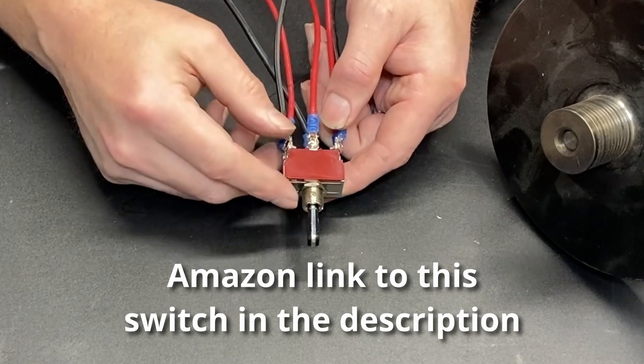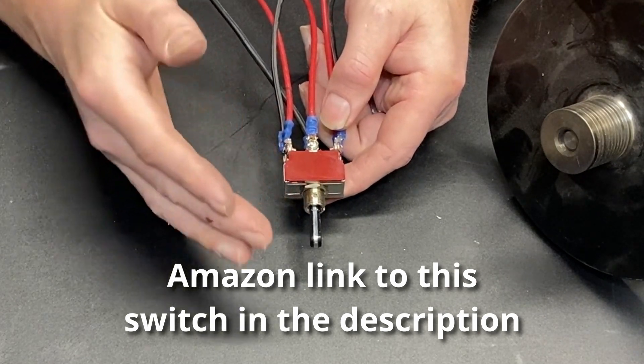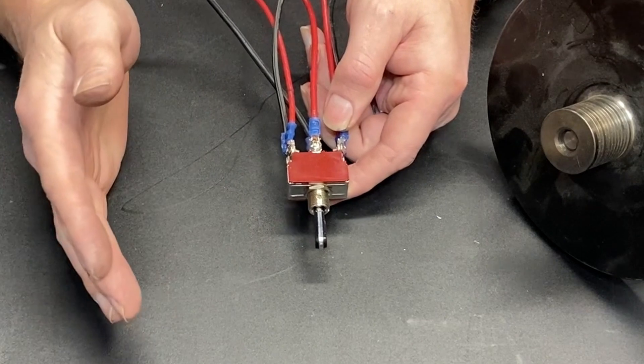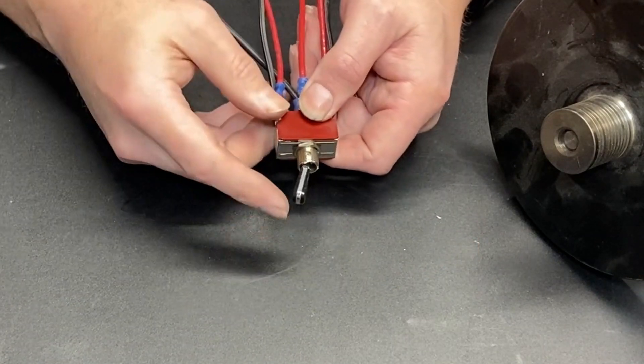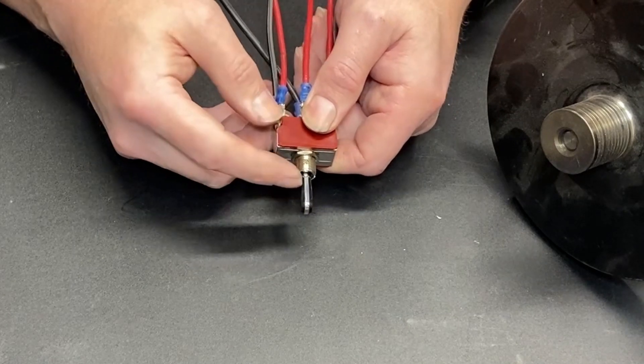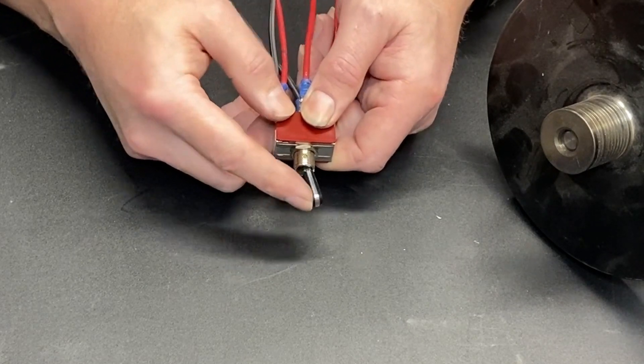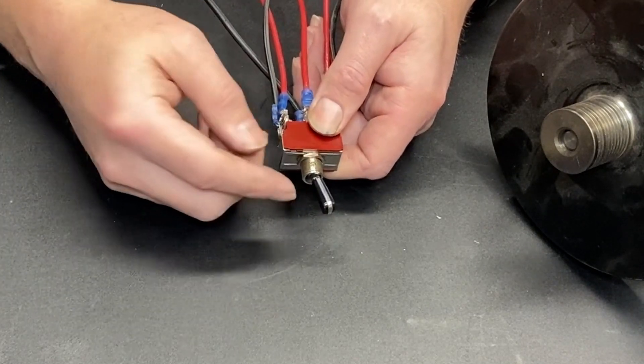The center-off is extremely important because they make double-pole, double-throw switches that are on-on. So, you flip it this way and it's on. It doesn't have a stop in the middle like this one. It just immediately goes to the other direction and it's on.